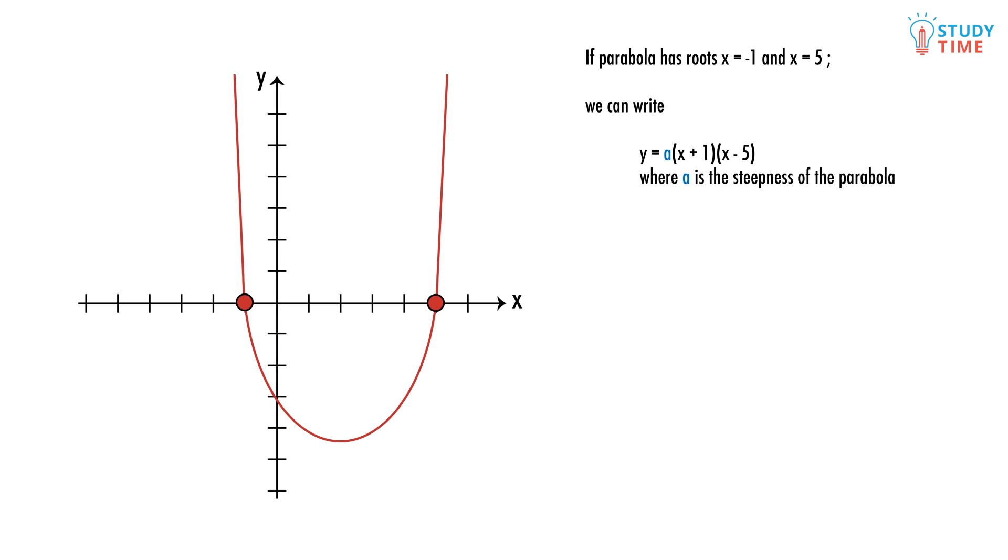What do we know about parabolas? They're symmetrical, so we know our vertex or turning point is halfway between the roots. Negative one plus five divided by two equals two, so we know that our x-value for the vertex is two. Let's say in this example we are told that the y-value for the vertex is at negative 4.5. We substitute these values into our equation: negative 4.5 equals a times (2 plus 1) times (2 minus 5).